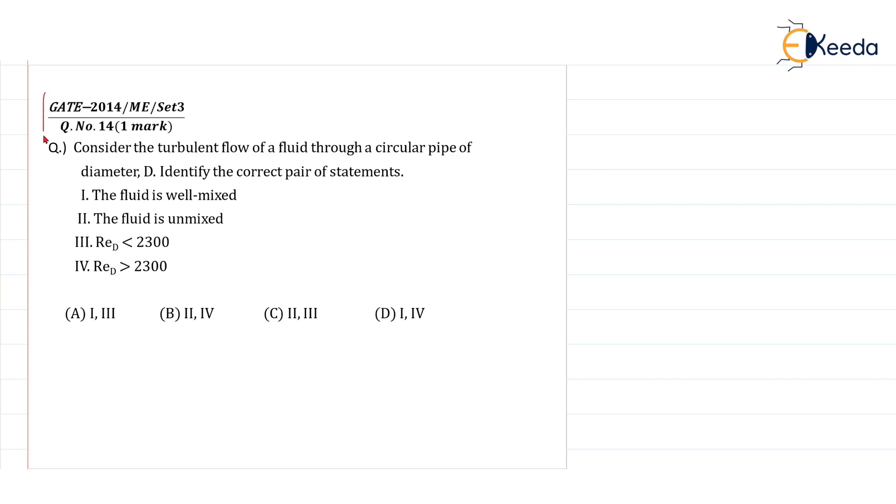As per the given question in GATE 2014 mechanical engineering set 3, question number 14 for one mark: Consider the turbulent flow of a fluid through a circular pipe of diameter capital D. Identify the correct pair of statements.